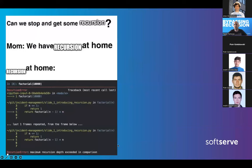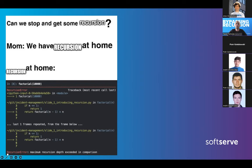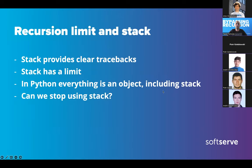I wanted recursion to last forever, but suddenly we have limitations. If I wanted to compute the factorial of a really large number, I can't with this approach. I'd have to reimagine my function, make it another way - but I really don't want to. What Python magic can we apply just to bypass it?